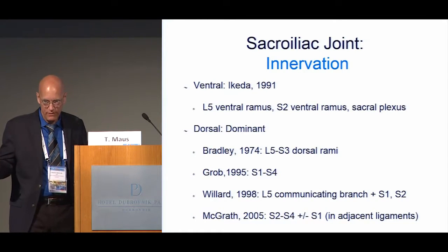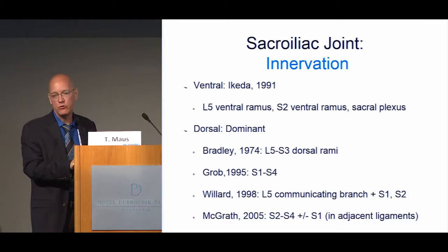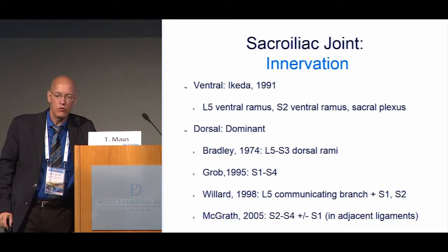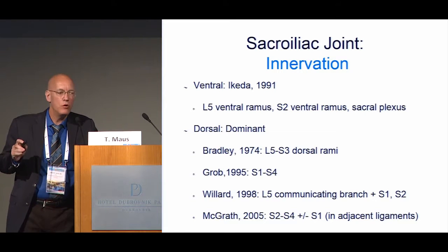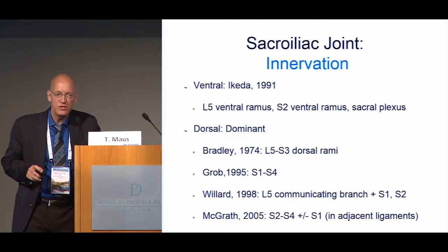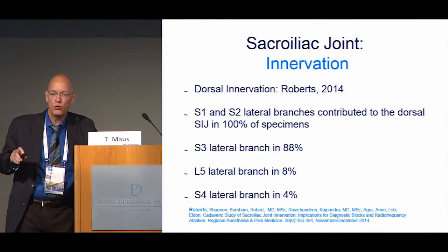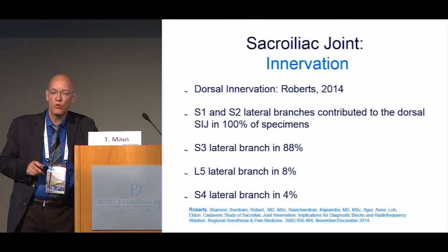If this joint is going to hurt, it has to be innervated. The 19th century German literature suggested a significant ventral component, later confirmed by Akesson in 1991, showing innervation from the L5 ventral ramus, S2 ventral ramus, and the sacral plexus. But it's long been known that the dominant innervation is dorsal. Bradley, Grob, Willard, and McGrath all defined varying degrees of dorsal innervation. The most recent study by Roberts carefully showed that S1 and S2 lateral branches contributed to dorsal innervation of the SI joint in 100% of specimens, the S3 lateral branch in nearly 90%, with lesser contributions from the L5 dorsal ramus and L4 lateral branch.